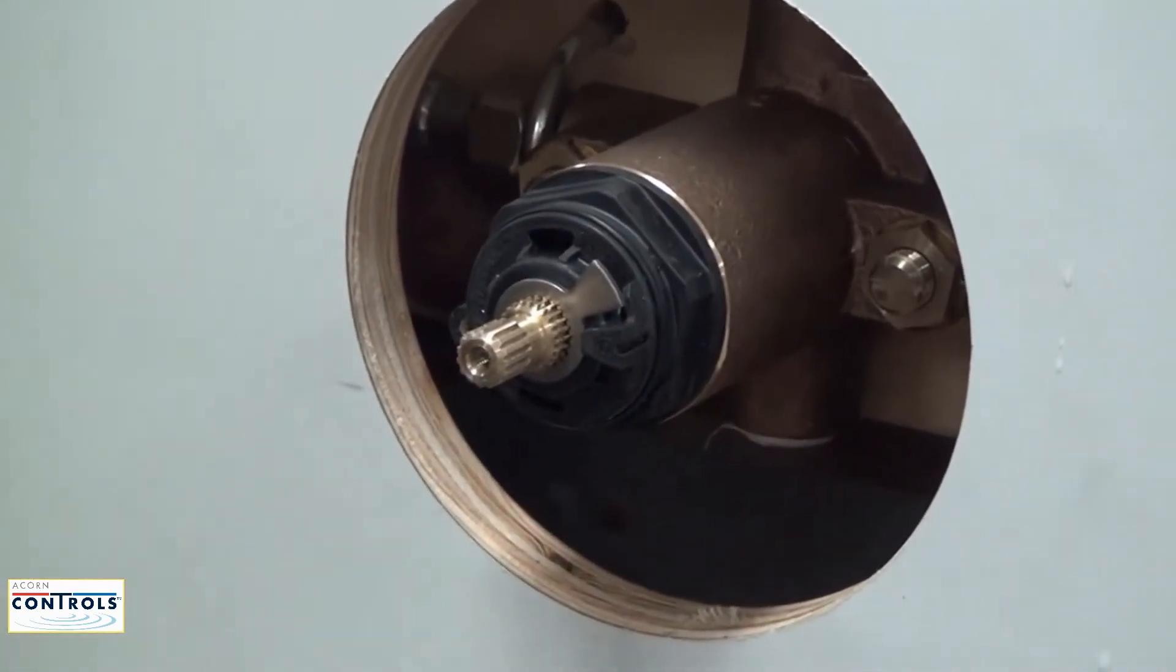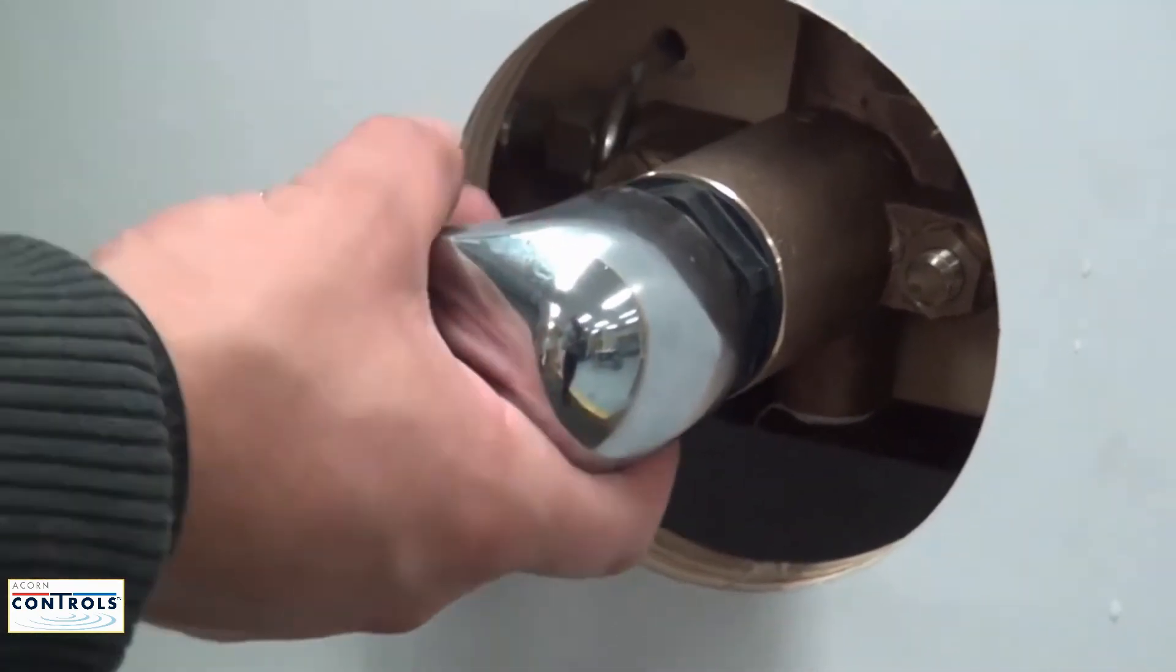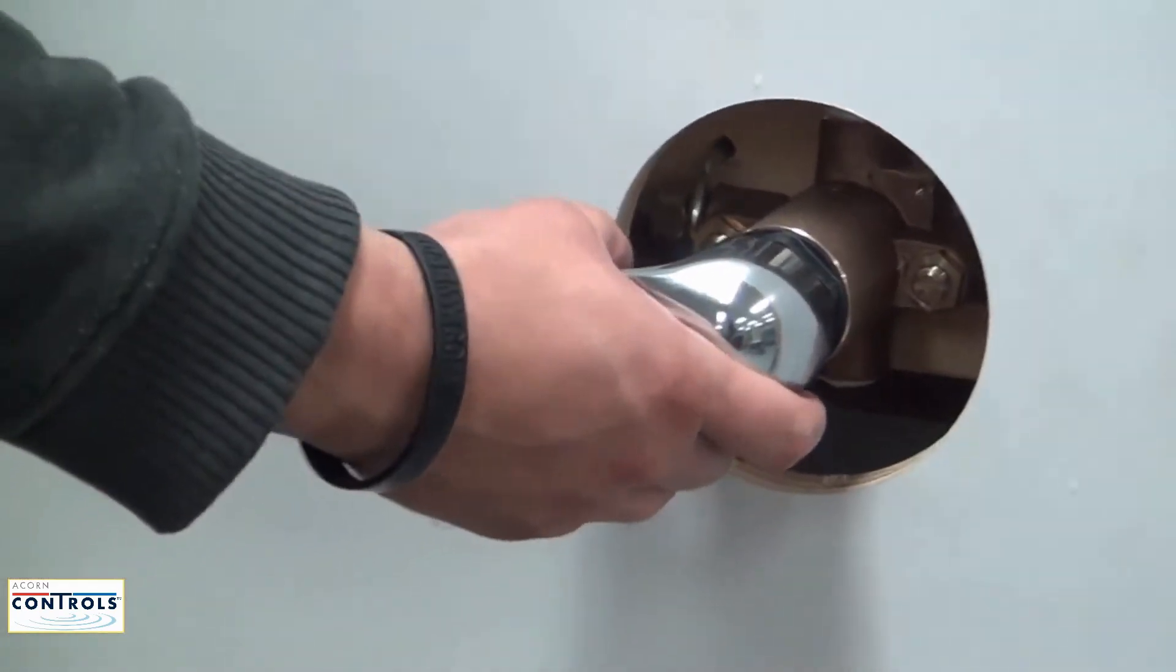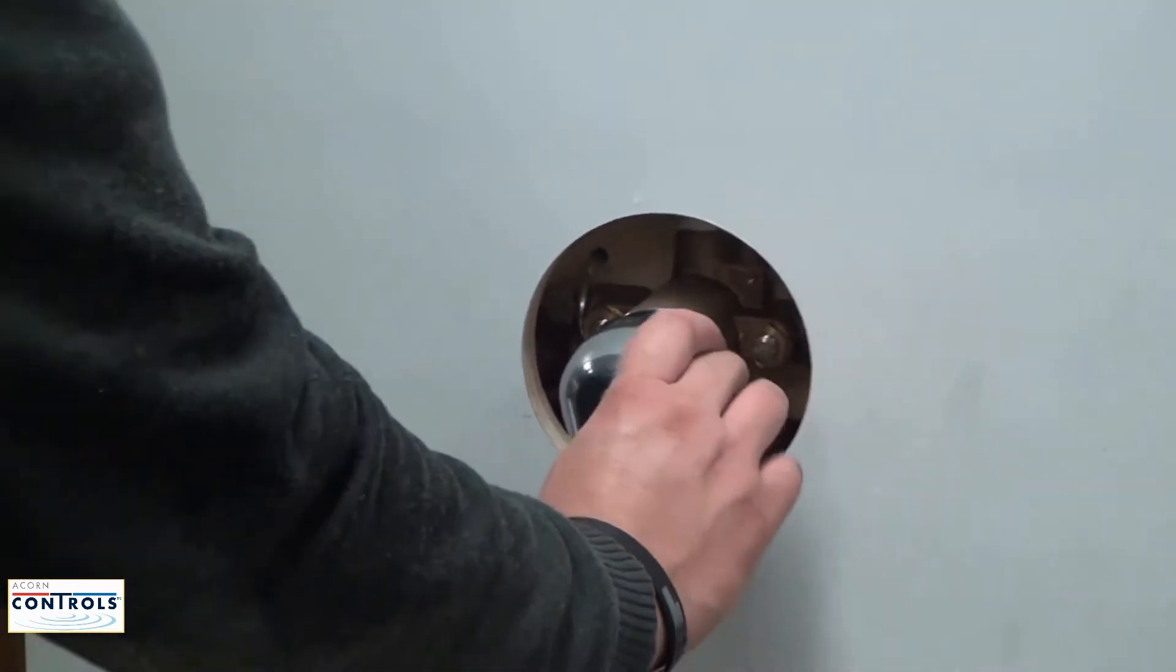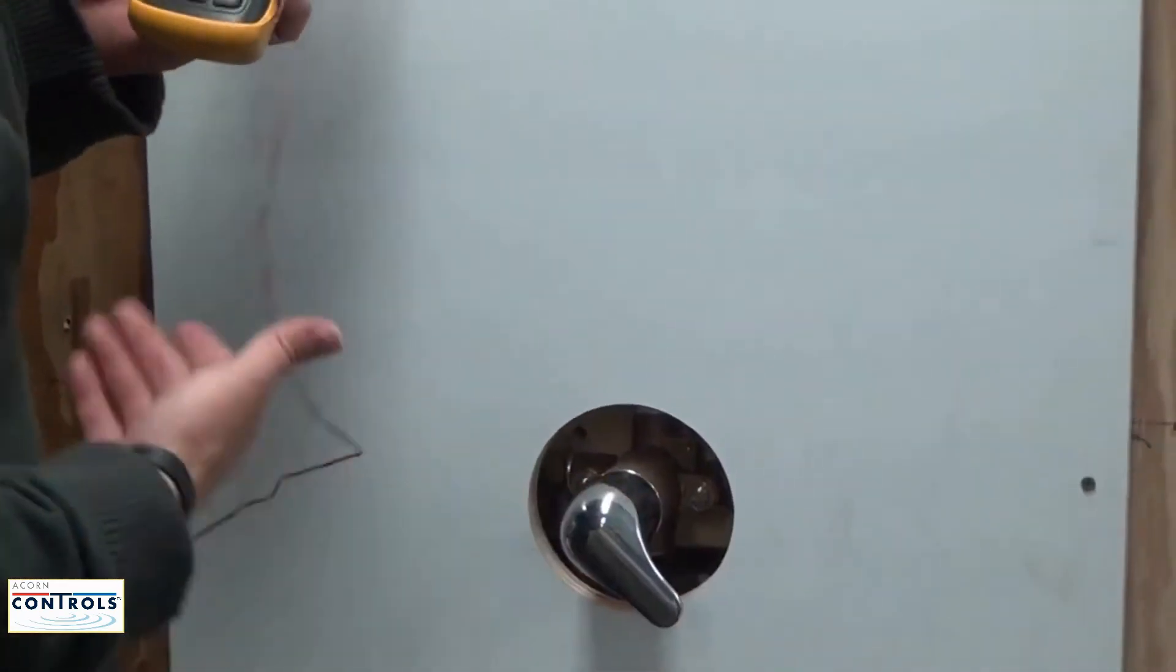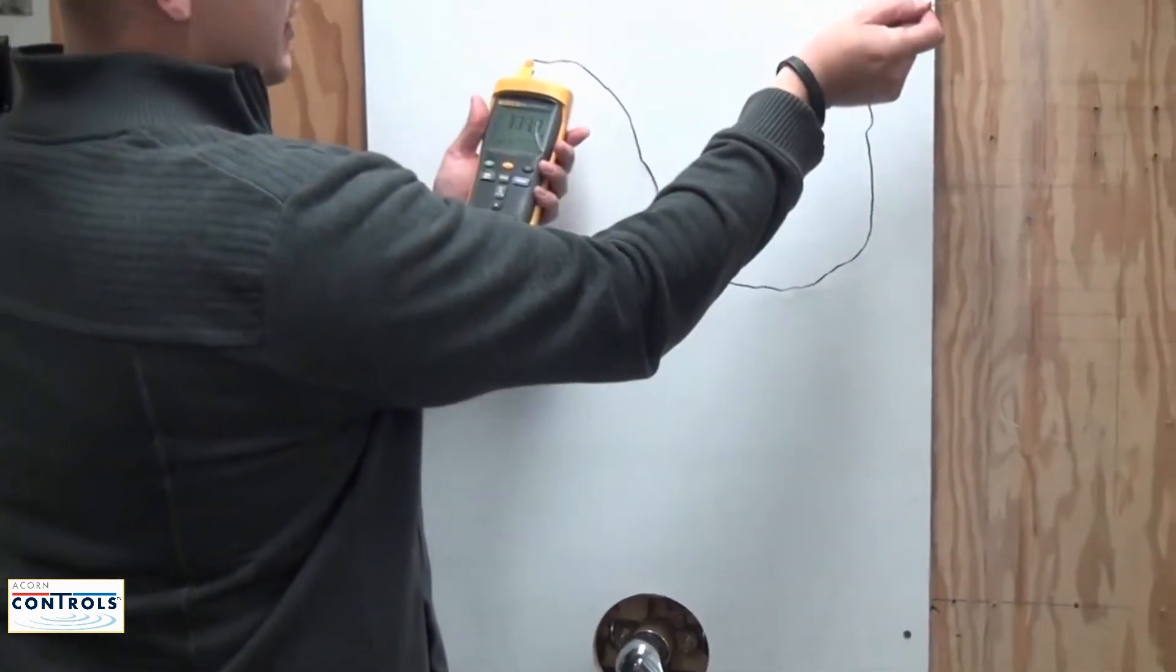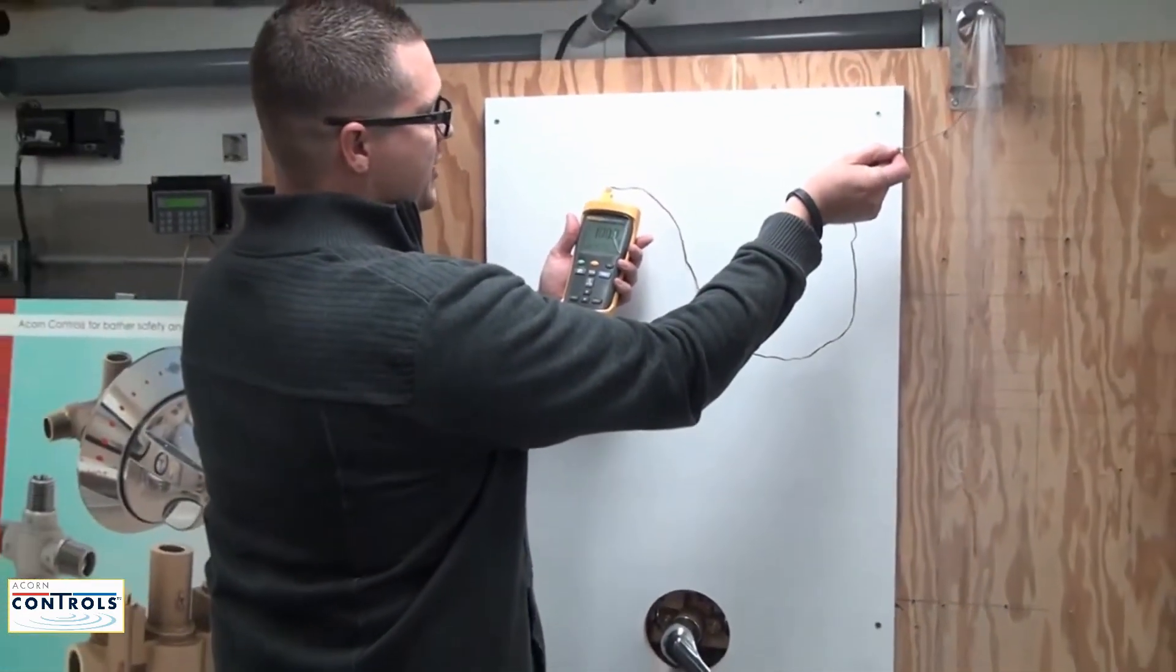Once the off stop has been installed, rotate the handle clockwise to find your desired temperature. Using your temperature measuring device, measure the temperature of the water and set your stop to your desired temperature.